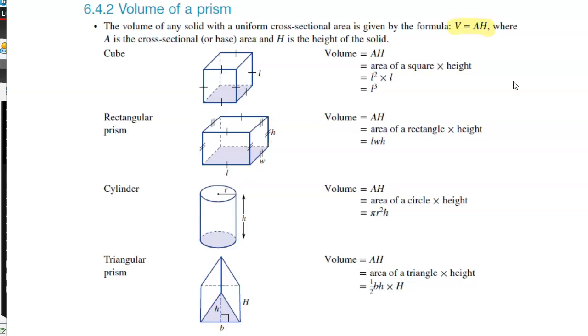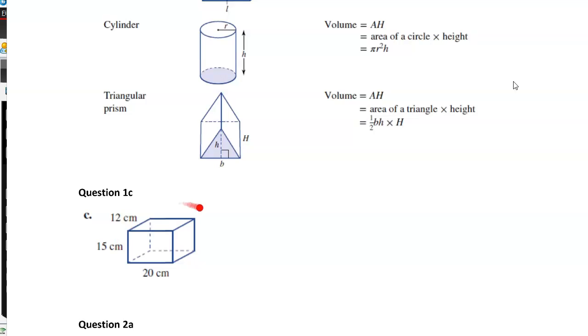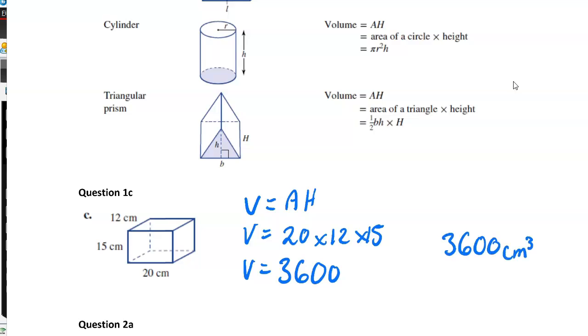Our first one is a rectangular prism, 12 by 15 by 20. Volume equals area times h. So volume equals, that bottom rectangle is 20 by 12 and the height is 15. So volume is 20 times 12 times 15, which is 3,600 cubic centimeters.